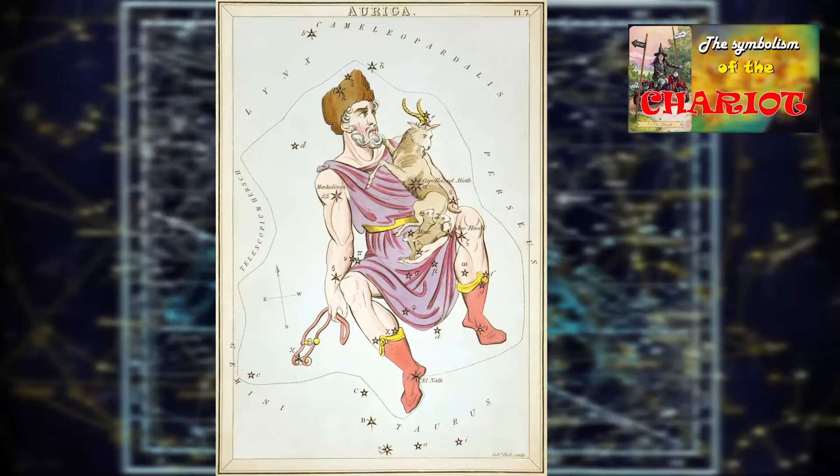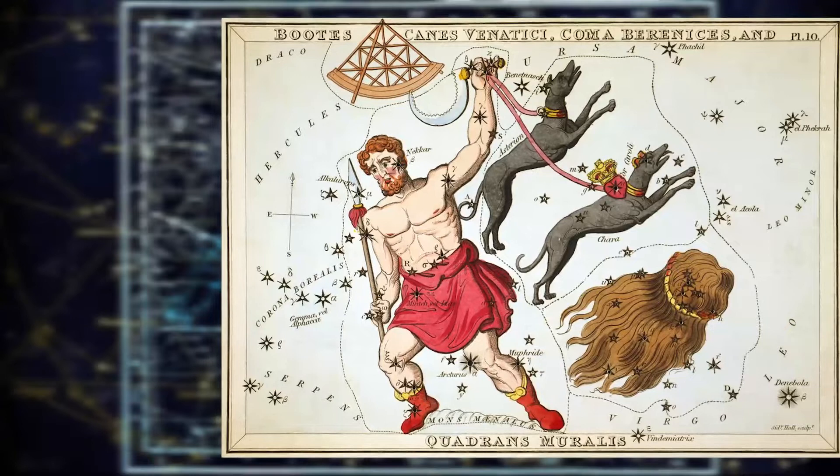Auriga, the Charioteer. We have a video in the playlist entitled The Symbolism of the Chariot. Berenice's Hair — we have a video in the playlist entitled The Symbolism of Hair.